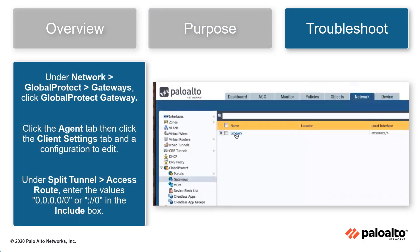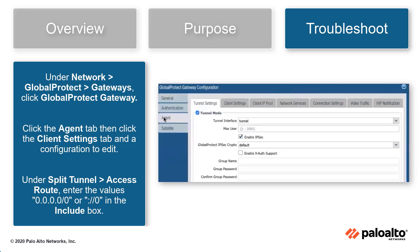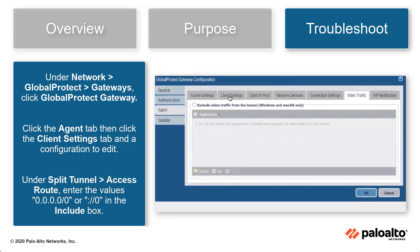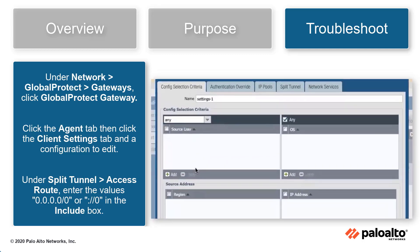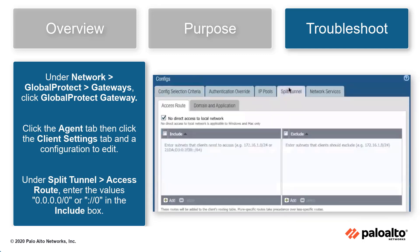Under Networks, GlobalProtect, Gateways, click the GlobalProtect gateway, click the Agent tab, then click the Client Settings tab in a configuration to edit. Under Split Tunnel, Access Route, enter the value 0.0.0.0/0 or ::/0 in the include box. This will ensure the best practice check passes.